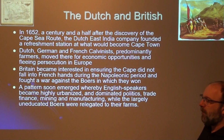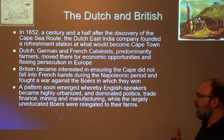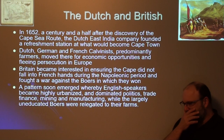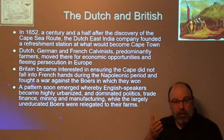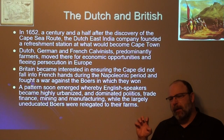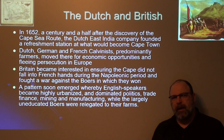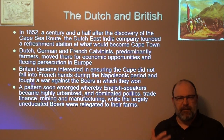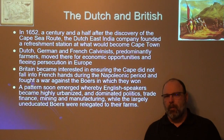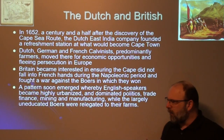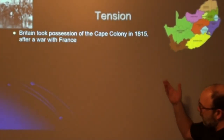After 1815, when Britain took control of the southern colony, a pattern emerged where English speakers became highly urbanized, dominating politics, trade, finance, mining, and manufacturing, while the largely uneducated Boers were relegated to their farms. The British took control of the coastal areas where they could maintain lines of communication with their colonies. With the British presence came money, skilled tradespeople, and expertise in finance and government, developing a robust colony, while the Boer farmers tried to maintain their farm life — a situation that would come to a head.